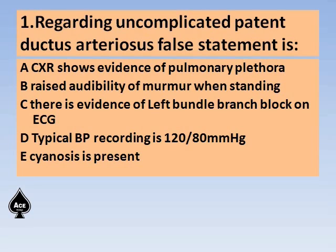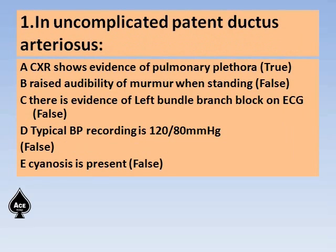Some of these questions may have more than one right answer, but usually in many entrance tests, single answer type is used — though PGI Chandigarh sometimes has multiple answer type. Chest X-ray showing evidence of pulmonary plethora is true, because being a left-to-right shunt, more blood comes to the pulmonary artery from the aorta, as systemic pressure is more than pulmonary pressure.